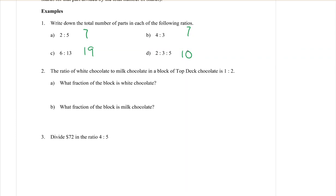Question 2: The ratio of white chocolate to milk chocolate on a block of Top Deck chocolate is in the ratio 1 to 2. What fraction of the block is white chocolate? First of all, remember we've just been counting parts. That ratio has got 3 parts, adding them together.